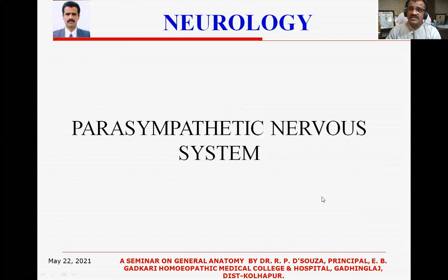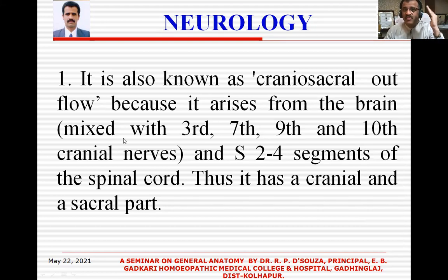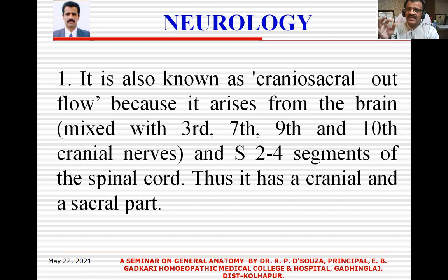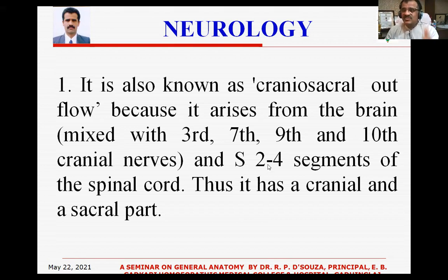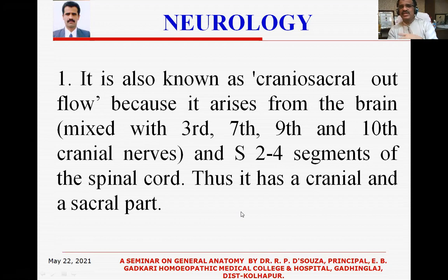The parasympathetic nervous system is known as craniosacral outflow or craniosacral flow because it arises from the brain — the cranium. It is mixed with the third, seventh, ninth, and tenth cranial nerves. Third is oculomotor, seventh is facial, ninth is glossopharyngeal, and tenth is the vagus nerve. These four make the cranial part, and the sacral part is made by S2, S3, and S4 — three segments from the sacral part of the spinal cord. Thus it has a cranial and a sacral part, and is called the craniosacral outflow.